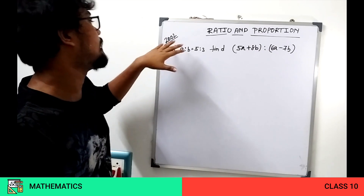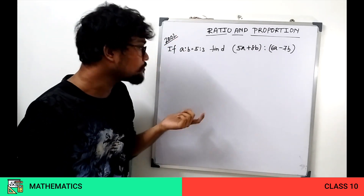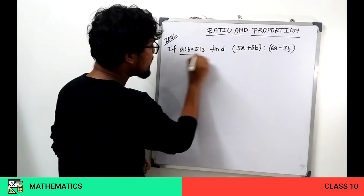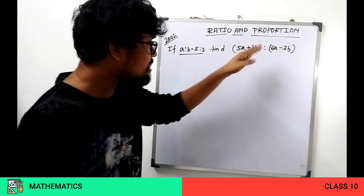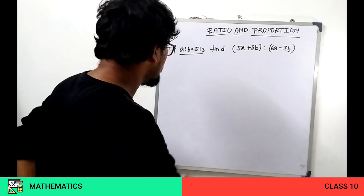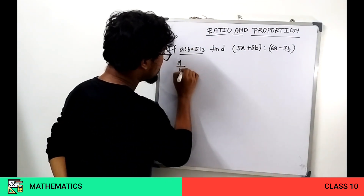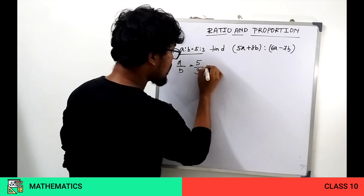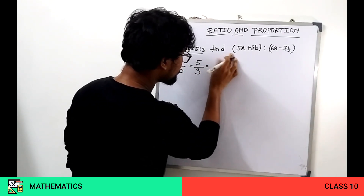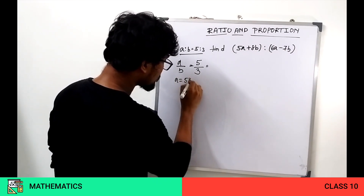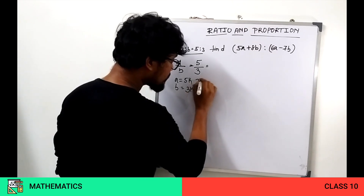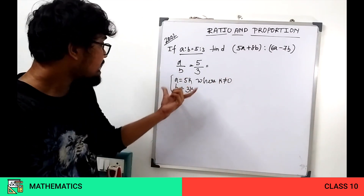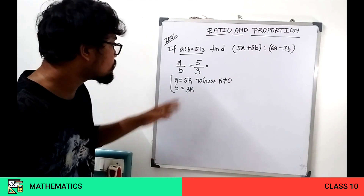Now I will show a Type 1 problem from year 2002. Given A is to B equals 5 is to 3, find 5A plus 8B is to 6A minus 7B. To solve this, I take A by B equal to 5 by 3, then let A equal to 5k and B equal to 3k, where k is a nonzero integer.